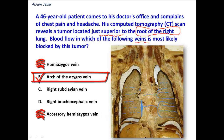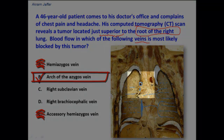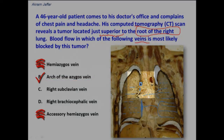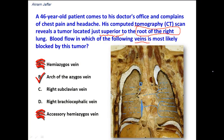Option B, arch of the azygous vein — yes, this is the correct option. You can see here in this coronal section it has been cut, and because the arch extends from behind forwards above the root of the right lung, it looks like a circle in this section. It crosses from behind forwards and drains into the superior vena cava by arching above the root of the right lung. In fact, in an embalmed lung it impresses a groove on the mediastinal surface of the right lung — a groove for the arch of the azygous vein.